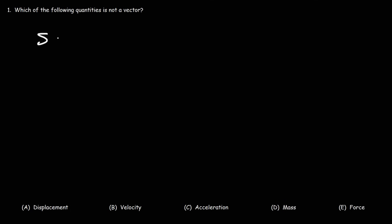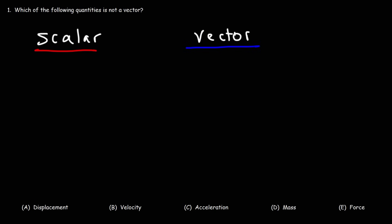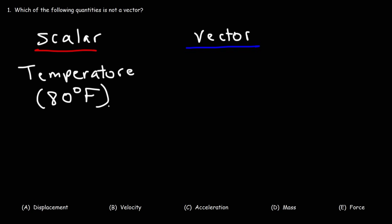We need to be familiar with two things: scalar quantities and vector quantities. A scalar quantity is something that has magnitude but no direction. For instance, temperature is a scalar quantity. It has magnitude — let's say if it's 80 degrees Fahrenheit, that's the magnitude of the temperature. But you can't apply direction to temperature.